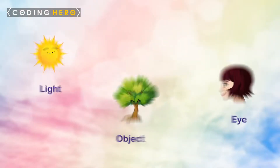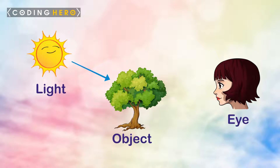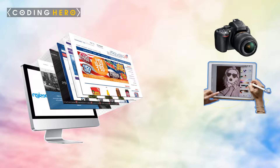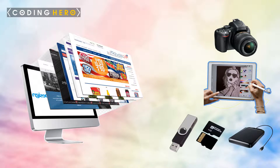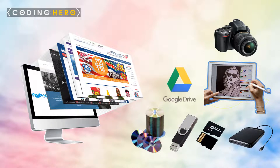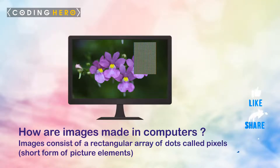First, let's understand what an image is. An image is a visual representation of an object that we can see or visualize. In computer terms, an image is any picture that is captured through some media such as a camera, or drawn and then stored in electronic form on an electronic storage media such as a hard disk, phone memory, pen drive, compact disc, or even cloud storage like Google Drive.